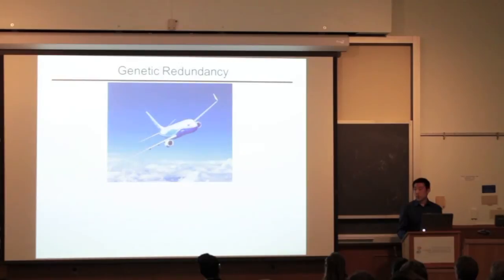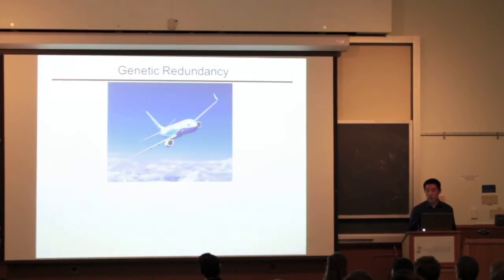Technical problems occur all the time, so why don't planes come crashing down every week? This is because every function in a plane is duplicated to anticipate problems. There are backup electricity, engines, etc. There's redundancy.